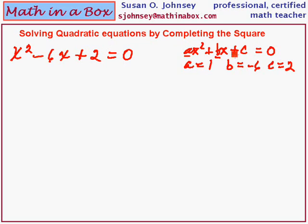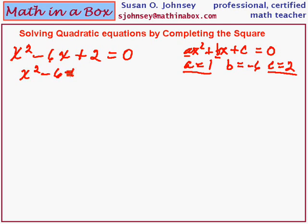The first steps in completing the square require you to do something with the a and the c. It doesn't really matter which of those two steps we do first, but they must be done first. The first thing I want to do is move the c to the right side. This is a positive 2, so I'm going to subtract 2 from each side, and I will have x squared minus 6x equals negative 2.